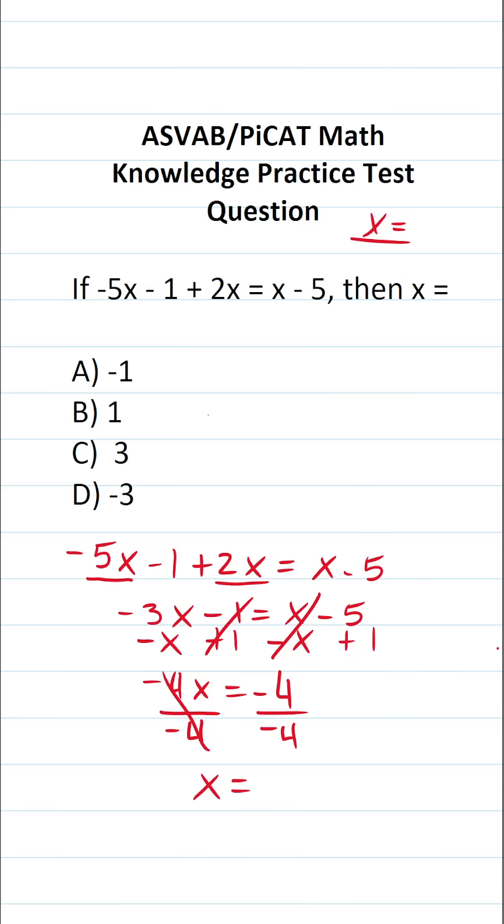Now, right here, we have a negative divided by a negative. A negative divided by a negative is going to be a positive. More specifically, negative 4 divided by negative 4 is going to be positive 1. So the answer to this one is B, 1.